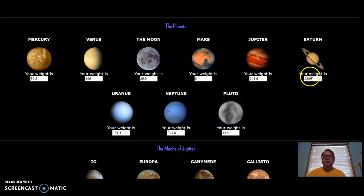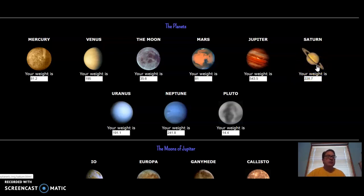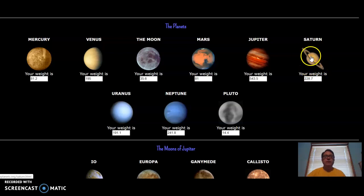Isn't that interesting? Even though Saturn is a giant gas giant, it doesn't have as much density. Actually, the planet Saturn would float in a bathtub if you could find a bathtub big enough.